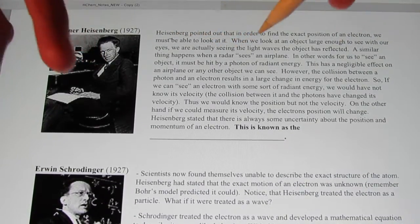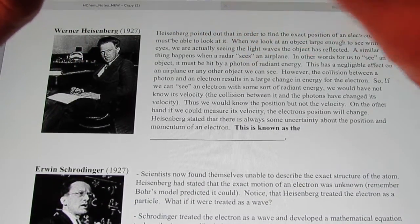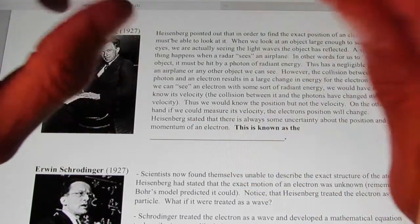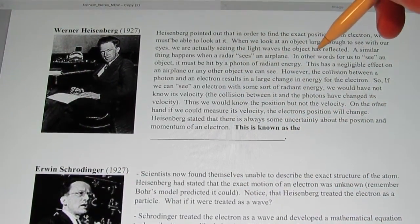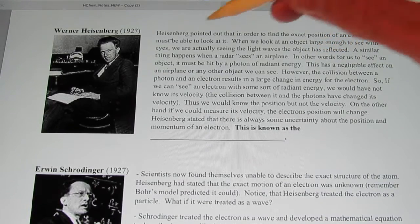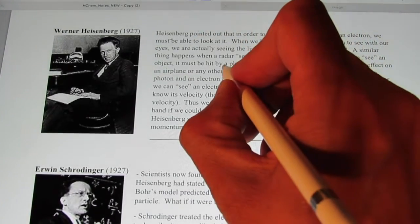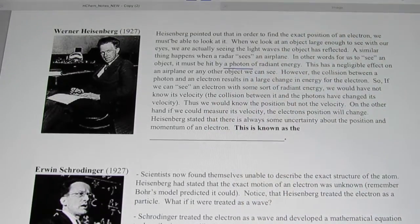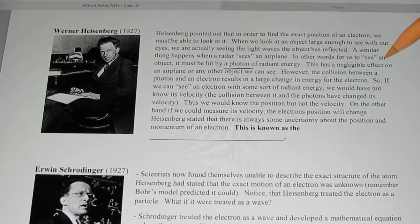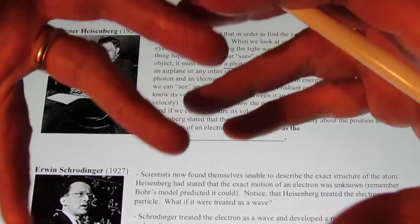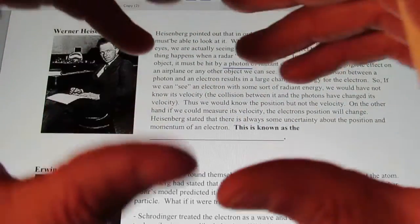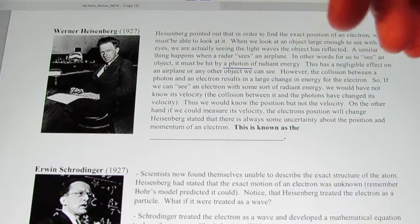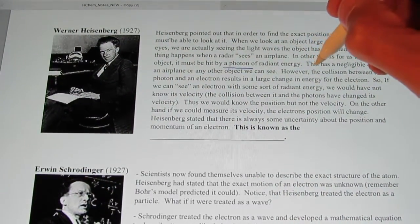A similar thing happens when a radar sees an airplane. Those electromagnetic radiations are bouncing off the airplane and coming back towards us and we can see it. In other words, for us to see an object, it must be hit by a photon of radiant energy. This has a negligible effect on an airplane or any other object that we can actually see because those objects are so massive and the photons are so tiny they have minimal kinetic energy.